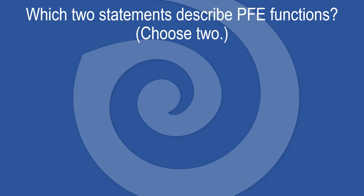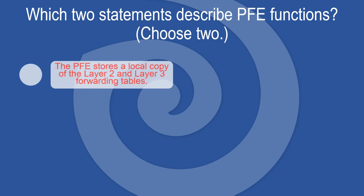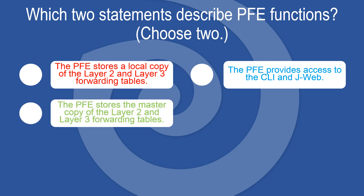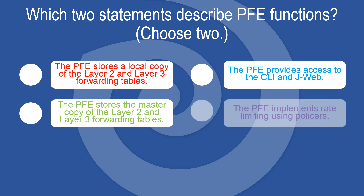Which two statements describe PFE functions? Choose two. The PFE stores a local copy of the Layer 2 and Layer 3 forwarding tables. The PFE implements rate-limiting using policers.